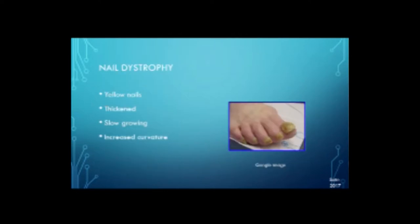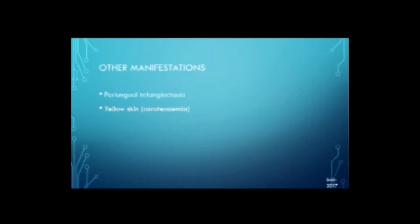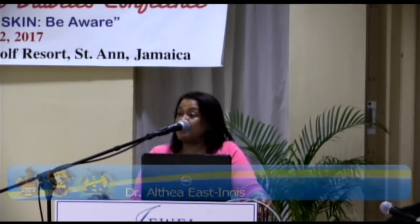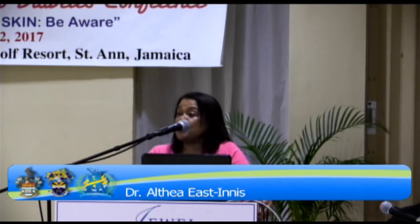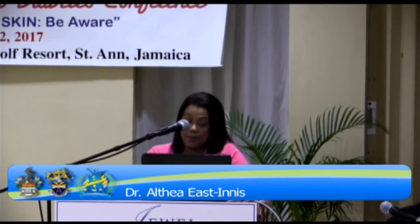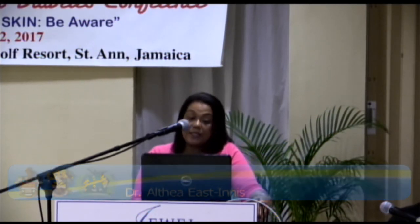Nail dystrophy occurs as well — yellow nails that are thickened, slow growing, with increased curvature. Other manifestations include periungual telangiectasia, which is dilatation of the blood vessels around the nails. They can also get yellow skin, carotenemia.